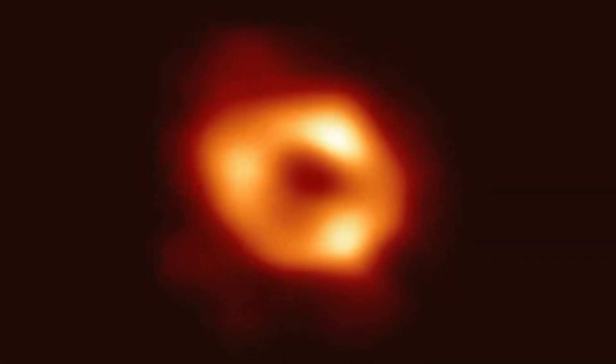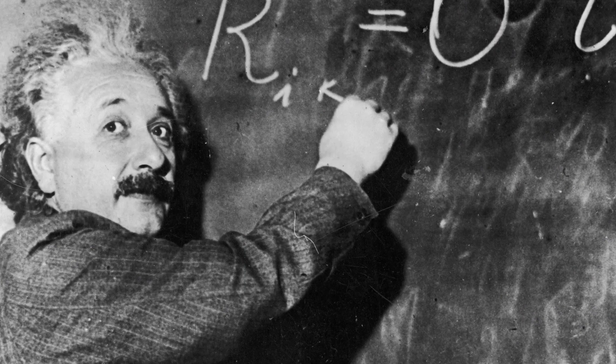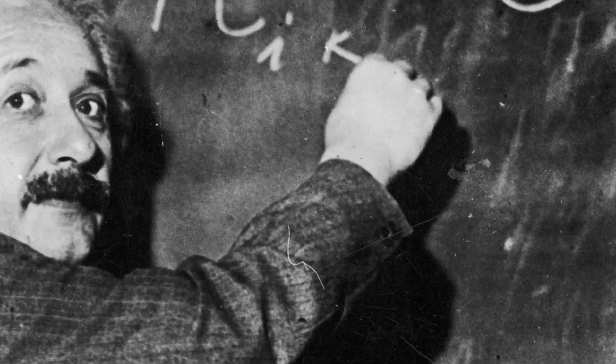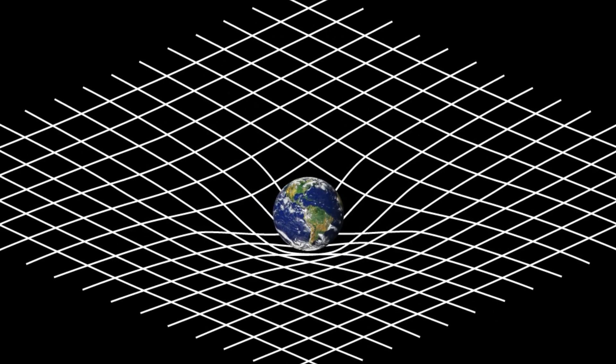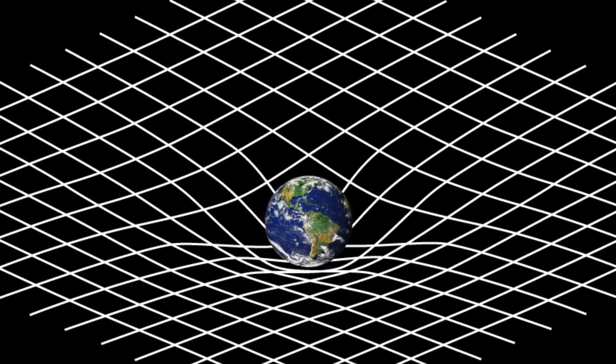Black holes were predicted as an exact mathematical solution to Einstein's equations. Einstein's equations describe the shape of space around matter. The theory of general relativity connects the geometry or shape of space to the detailed distribution of matter.